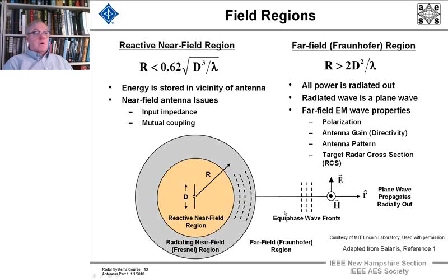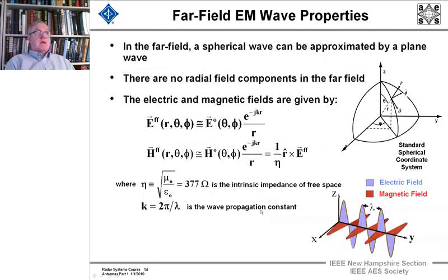Now, once we're out in the far field, we're generating a plane wave. And the K vector, which is the propagation vector, is going out radially. And in this notation, we have the electric field going vertically upward. And of course, your E cross H gives you the direction of propagation, so H would be out of the view graph. And that's the orientation of the electric field vector.